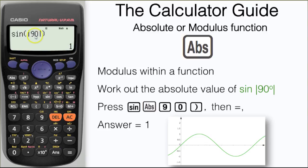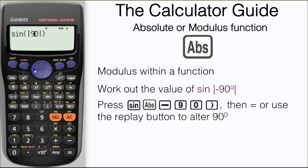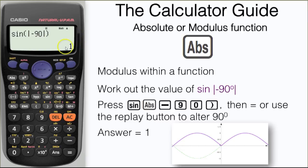For any values within our sine function that are greater than zero, we're going to produce the same as the regular sine curve. We're going to alter our value now to sine of minus 90 within the modulus function, and here we have our answer of 1.